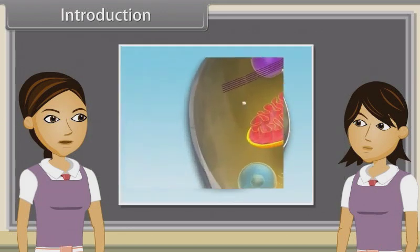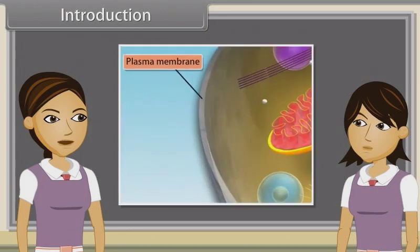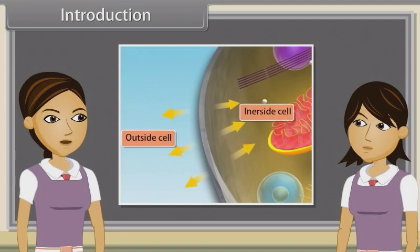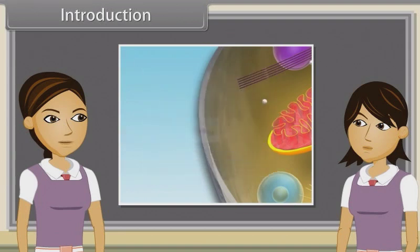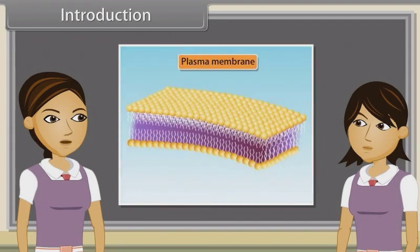Now we will discuss the structure of eukaryotic cells and also observe the structure and functions of cell membrane and cell wall.